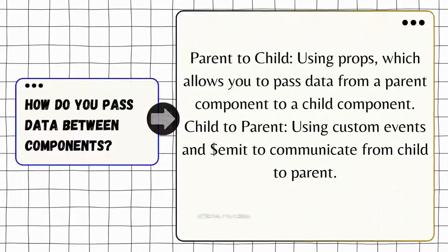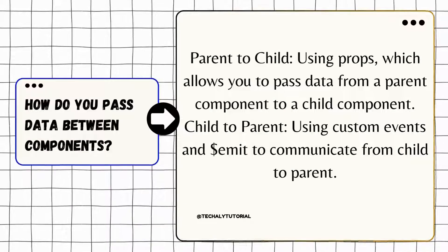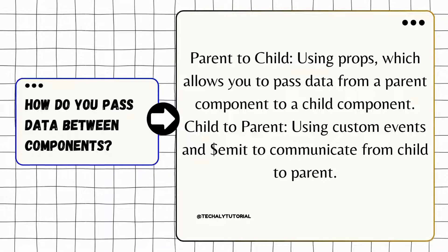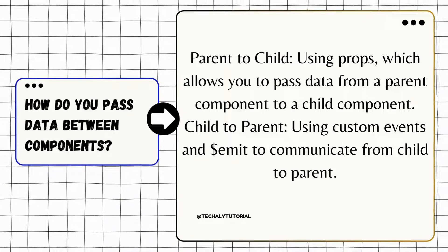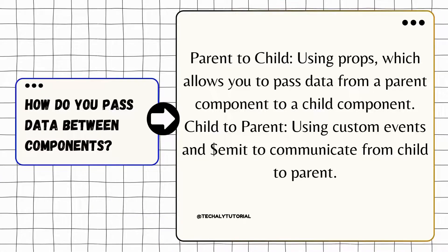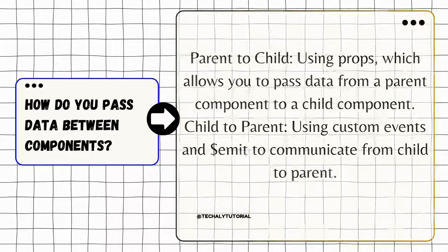Passing data between components: parent to child is done through props, which pass data from the parent component to the child. Child to parent is achieved using $emit to trigger custom events that the parent can listen for.